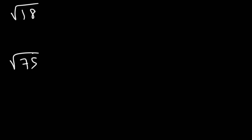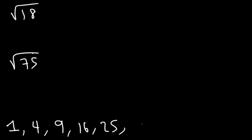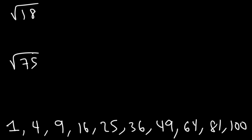Sometimes you may have to simplify square roots that don't contain perfect squares. For example, the square root of 18 and the square root of 75. You need to understand what perfect squares are: 1, 4, 9, 16, 25, 36, 49, 64, 81, 100 are all perfect squares because if you take the square root of any of these — say the square root of 36 — it simplifies to an integer.